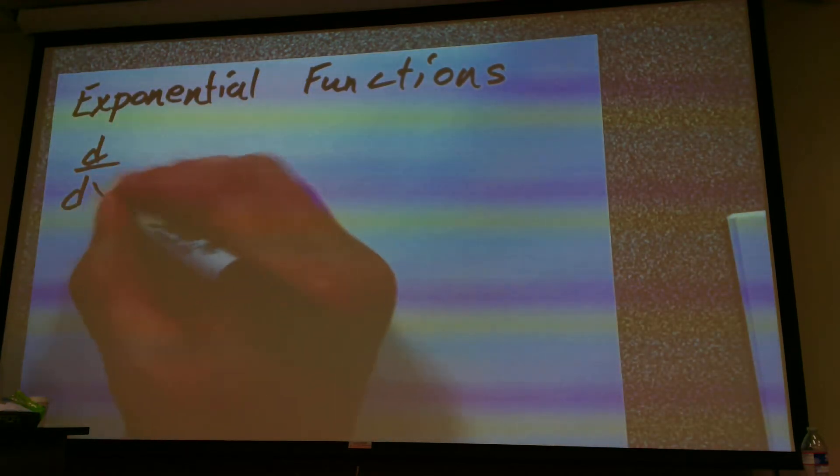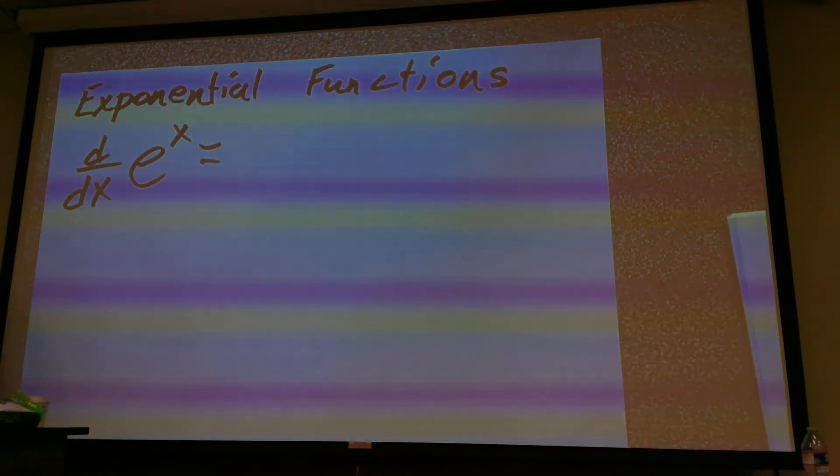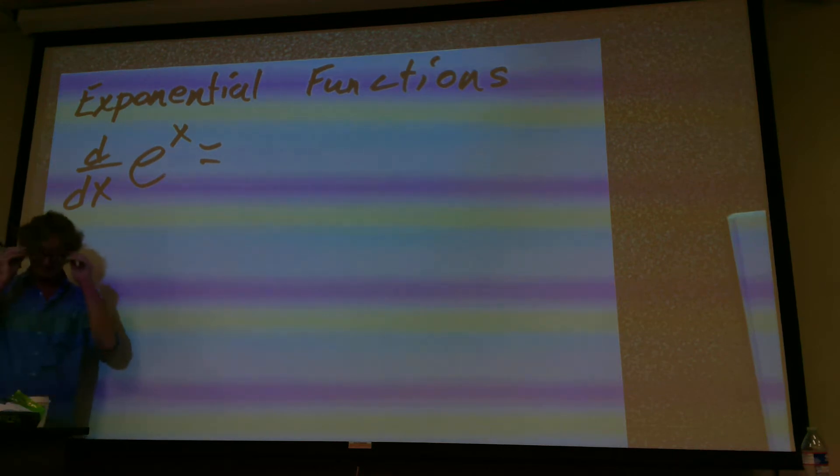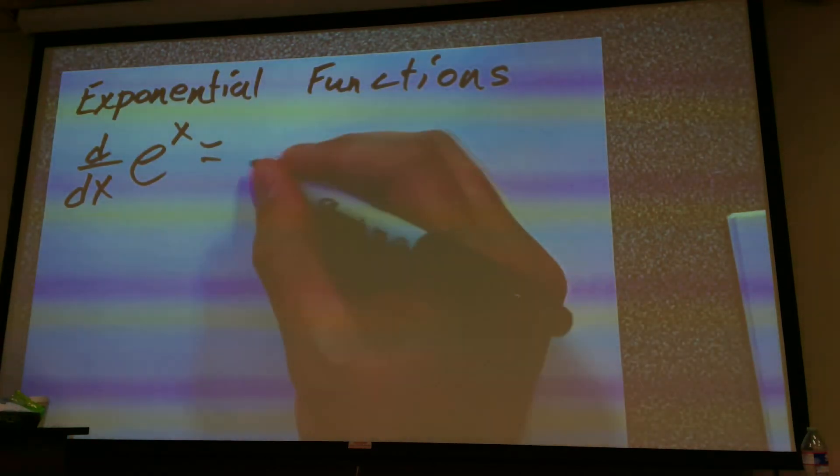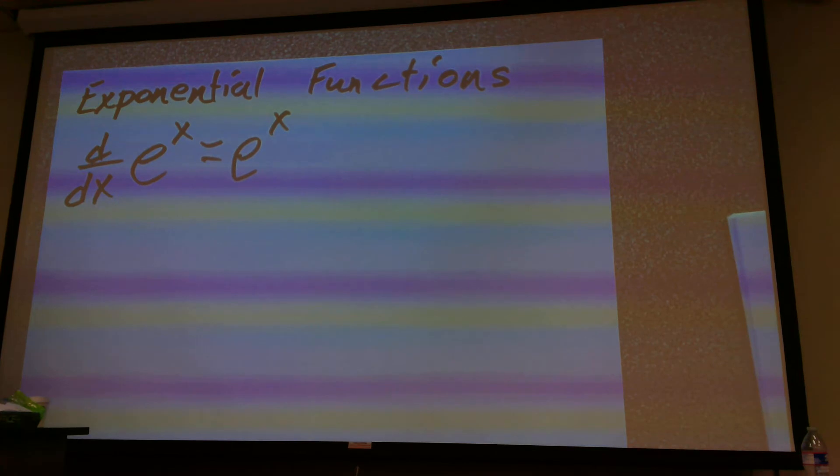So, the first one we're going to deal with is the derivative of e to the x. Now, e to the x is a very special one in the fact that its derivative is itself.